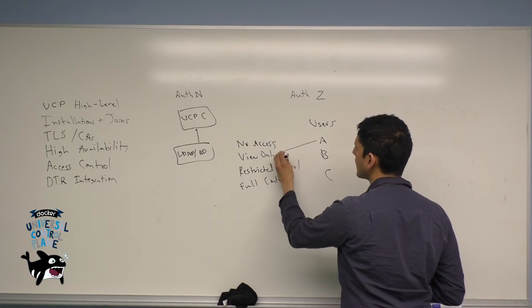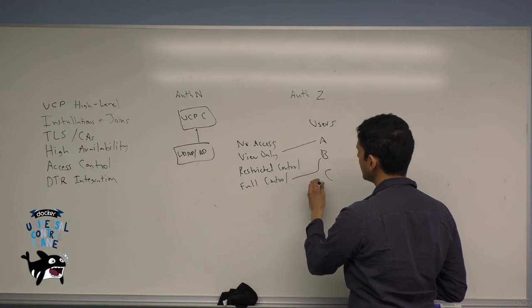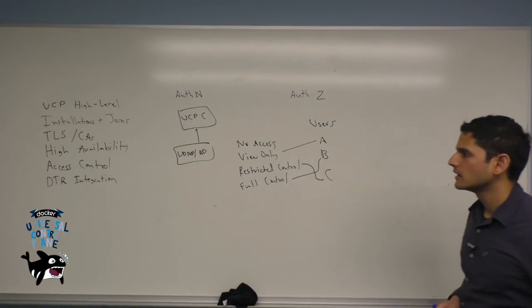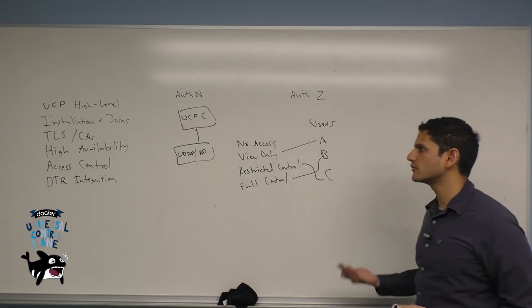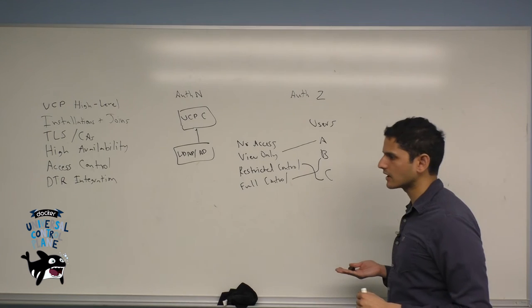So for example, for user A, I could set view only. For user B, I could set full control. And for user C, I could set restricted control. And again, you can decide that if you want to change this at any time as an admin, you can do so after you've created the account.